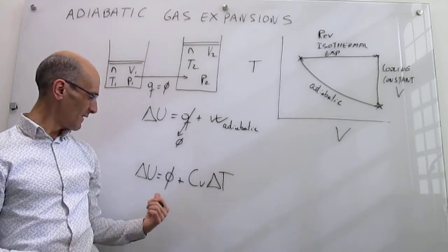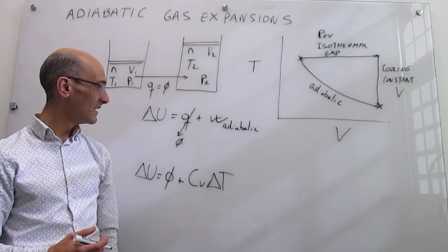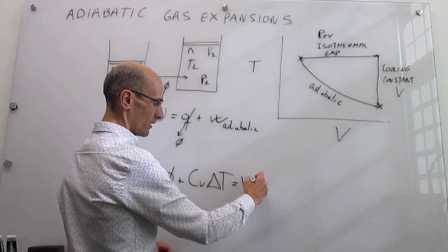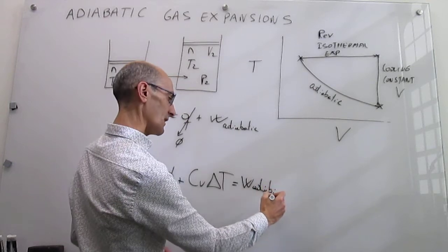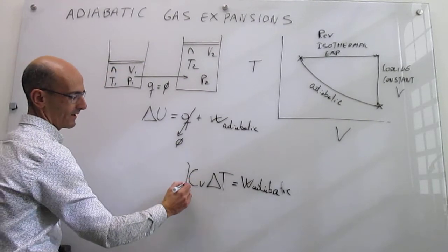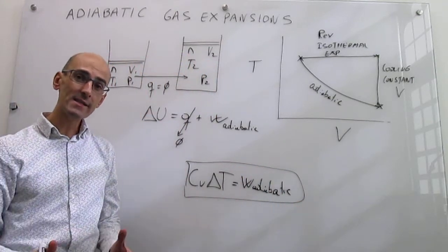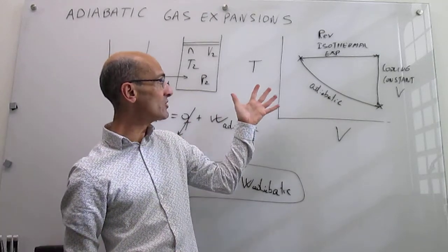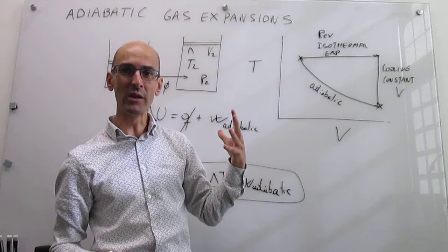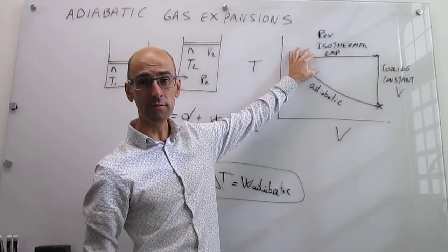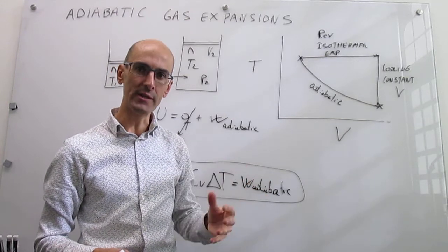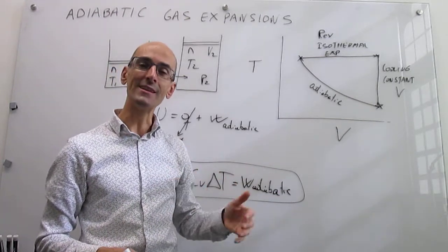By breaking the adiabatic process into these two familiar steps, we can calculate the change in internal energy. And remember, in the adiabatic process, ΔU equals the adiabatic work — so this is how we calculate work for an adiabatic expansion. In the next videos, we'll find a thermodynamic relationship connecting T1, V1 and T2, V2, and then extend it to include pressure and how pressure and volume change in an adiabatic expansion.